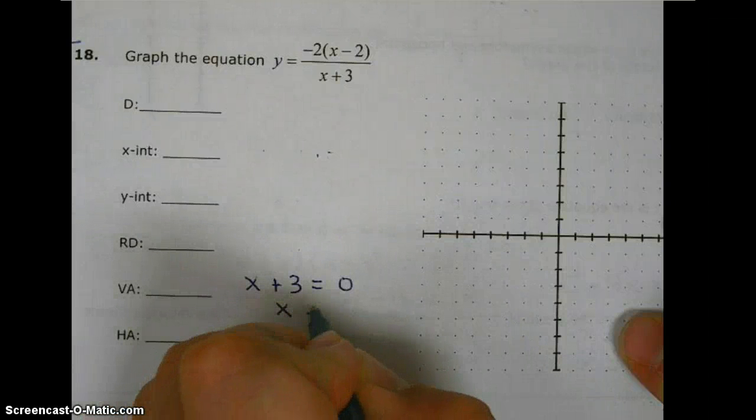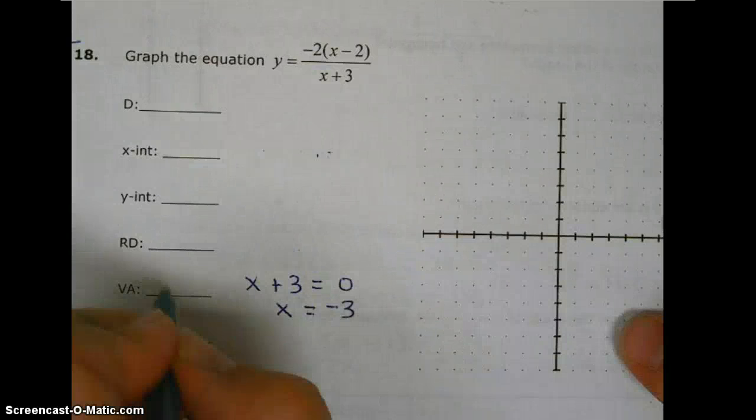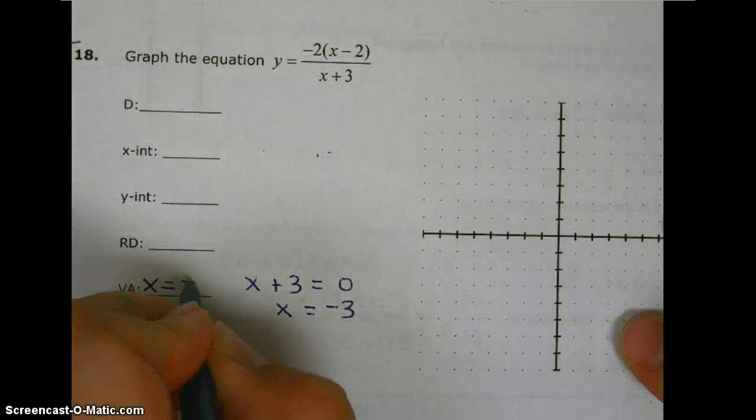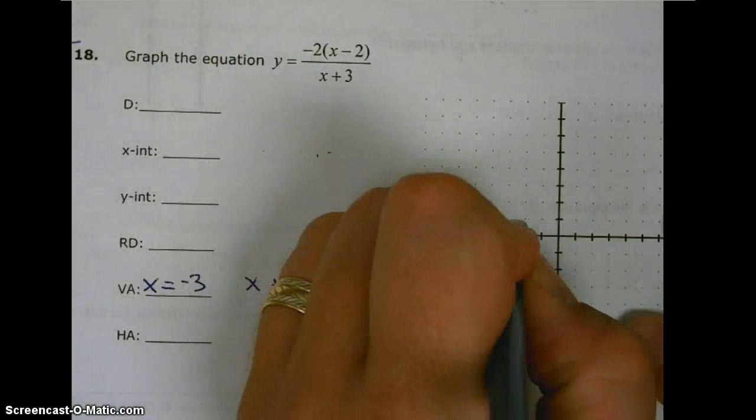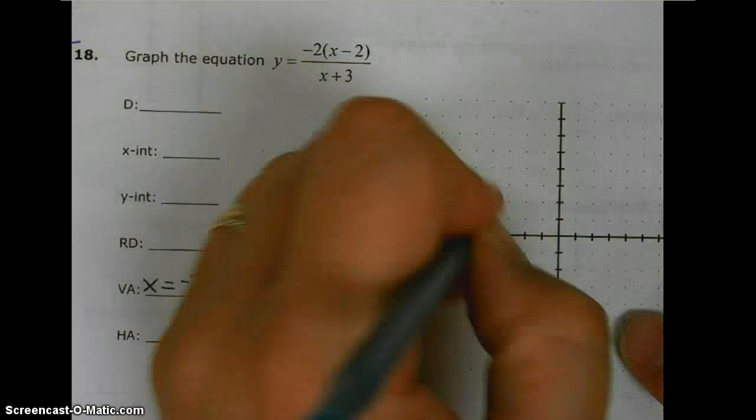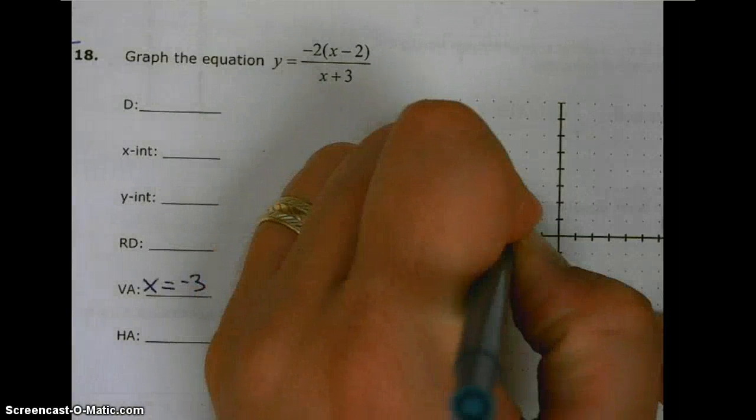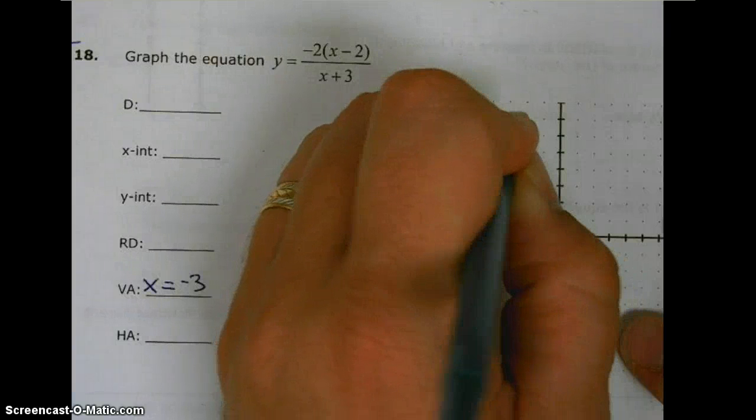So x equals negative 3. That is our vertical asymptote. So at negative 3, we draw in our vertical asymptote.